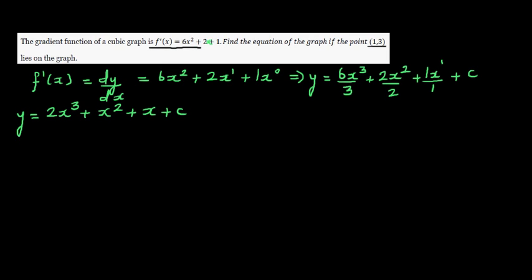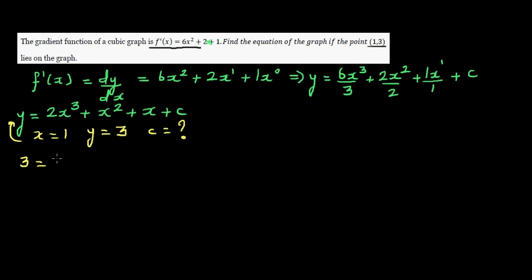The next thing given is: when x is 1, y is 3. From this we can find the value of c. Substituting into the equation: 3 = 2(1)³ + (1)² + 1 + c, which gives 3 = 2 + 1 + 1 + c, so 3 = 4 + c.